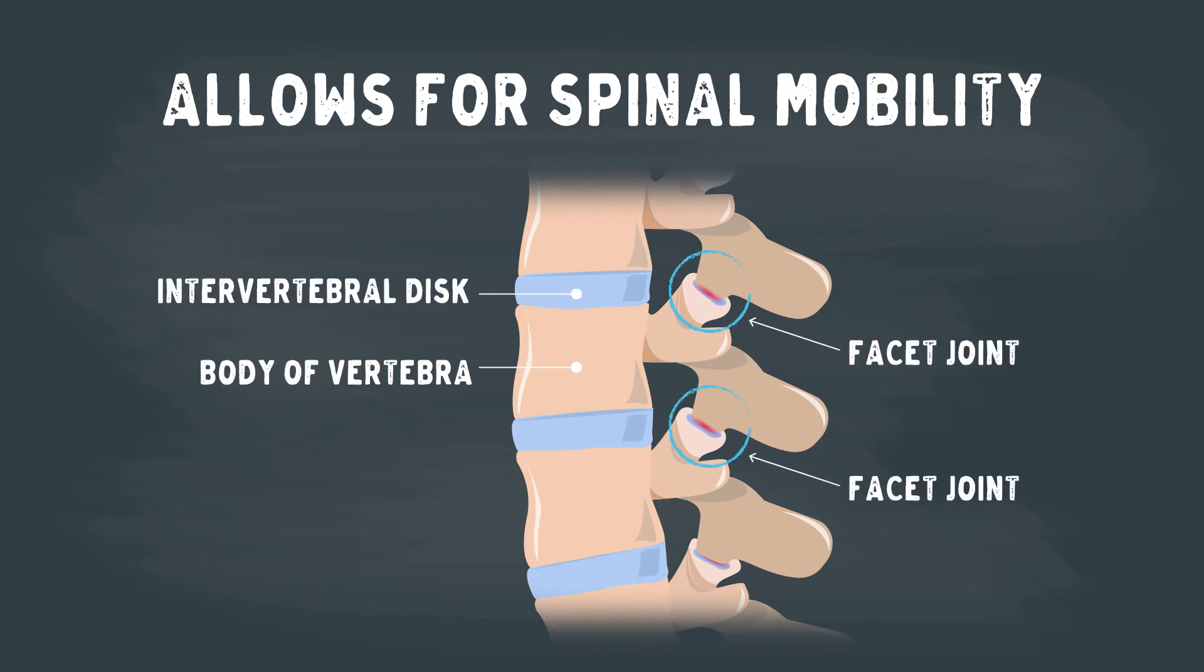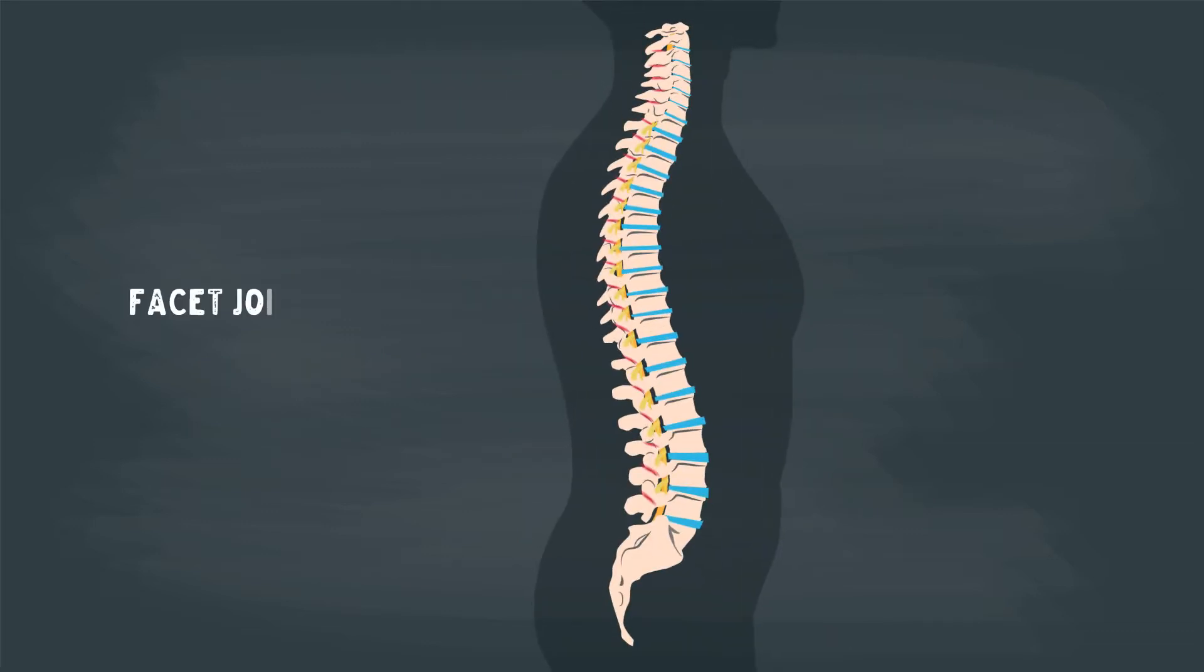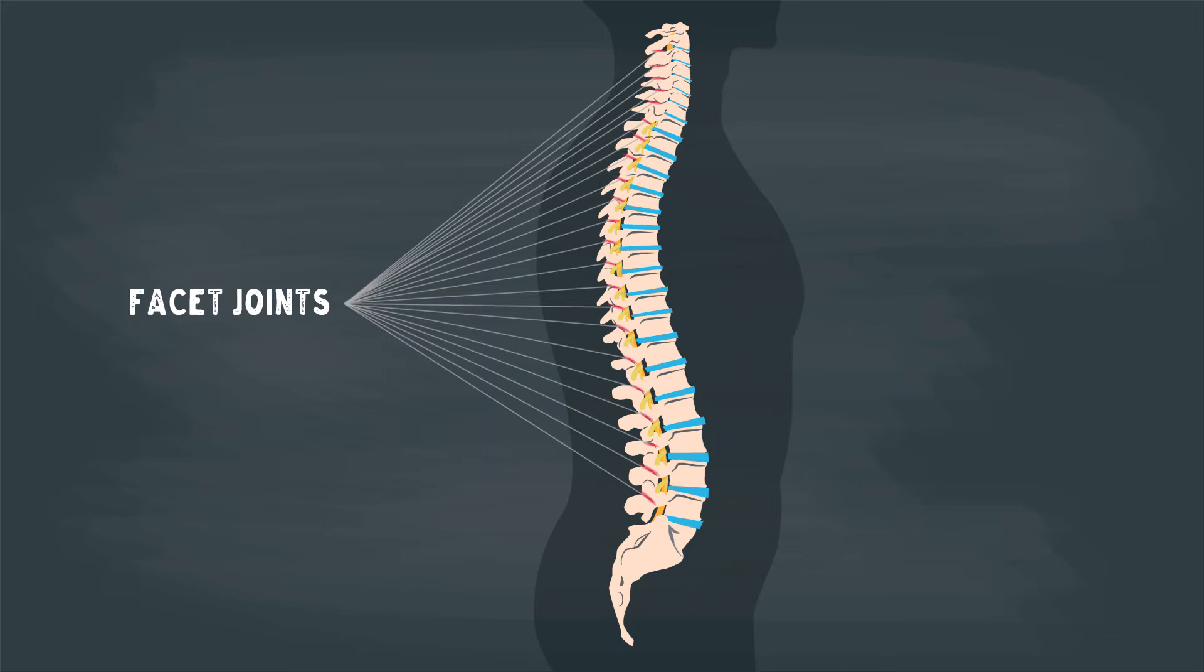These joints allow for spinal mobility and help us to enjoy our active lifestyles. Our spine consists of pairs of facet joints, one per side, at every vertebral level.